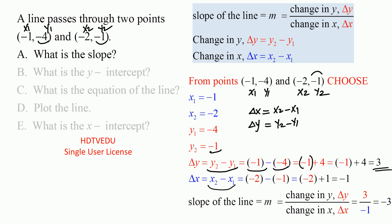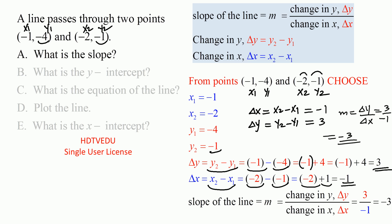What about change in x? That is x2 minus x1. x2 is negative 2, and x1 is negative 1. So negative 2 minus negative 1 equals negative 2 plus 1, which is negative 1. So slope is delta y over delta x: 3 over negative 1, which is negative 3.